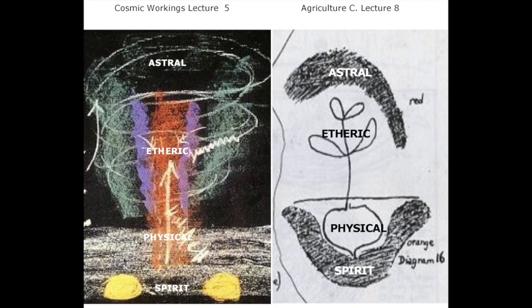Let us draw the plant in its entirety. Down here you have the root, up there the unfolding leaves and blossoms. As above, in the leaves and blossoms, the astral element is acquired from contact with the air, so the ego potentiality develops below in the root through contact with the manure.